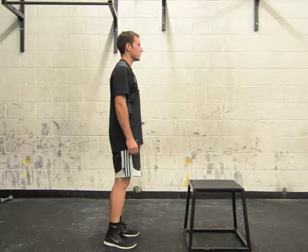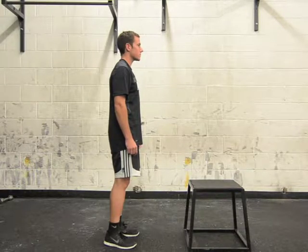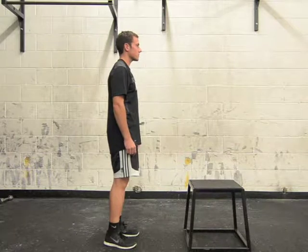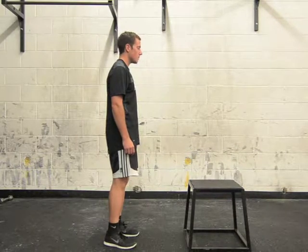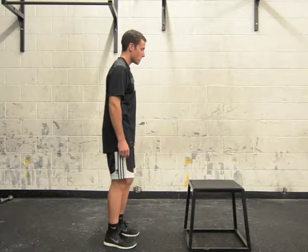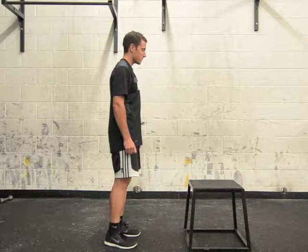The next exercise that is going to be performed is a box jump in the squat stance. The muscles that are going to be used are the quads, glutes, and hamstrings.